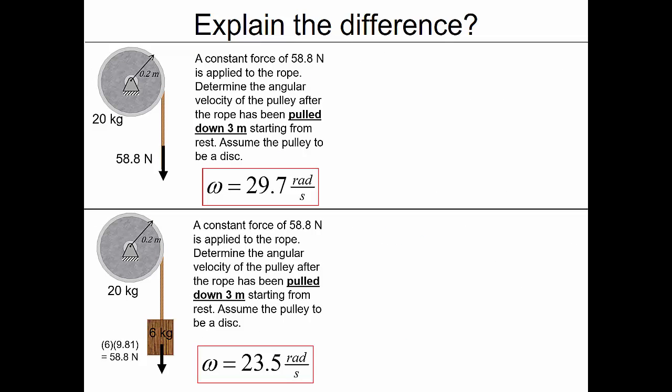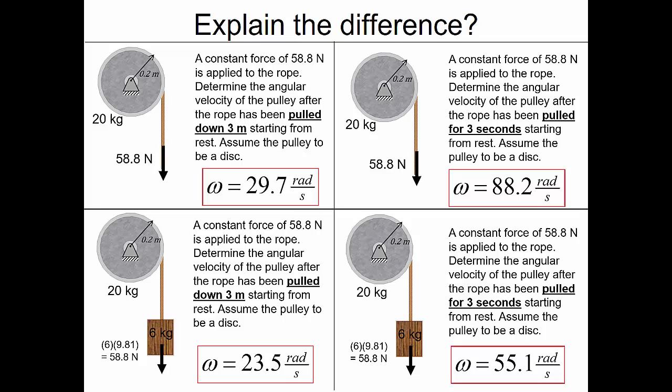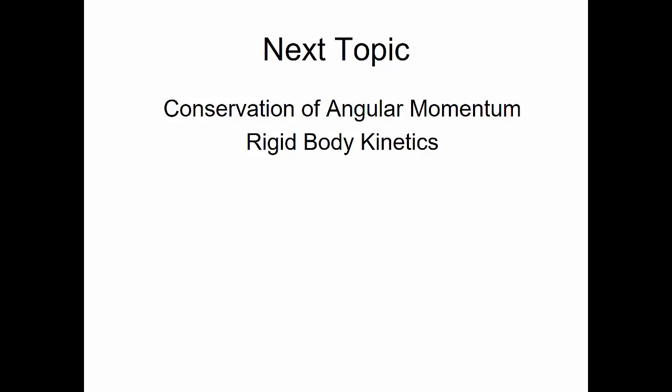Why is there a difference between the applied force of 58.8 newtons and the block weighing 58.8 newtons, resulting in different angular velocities? The block in the second problem has energy associated with it. The applied force in the first problem is only applied for those 3 meters and then is no longer part of the problem. The block, however, remains part of the system and has energy associated with it — so the energy of the system includes the block's energy, lowering the angular velocity. Similarly for momentum: with the applied force, all momentum goes into the spool; with the block, both spool and block share that momentum, decreasing the angular velocity.